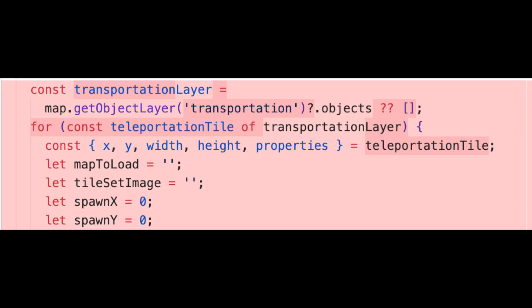I already have an interactive game object for transportation — if you want to see that video, it should be on screen in a card here. I decided to piggyback off of that logic to build out my dialogue system. I didn't want to call map.getObjectLayer separately for a bunch of string keys, so I tried to handle this programmatically.